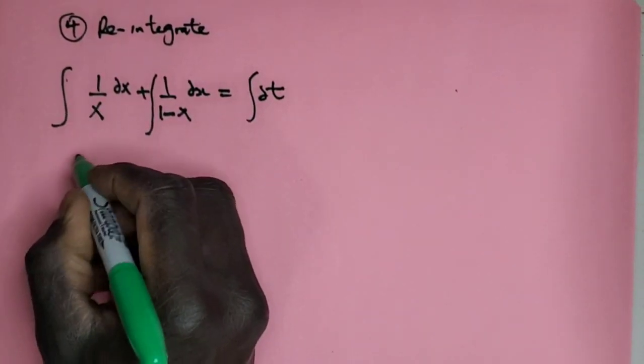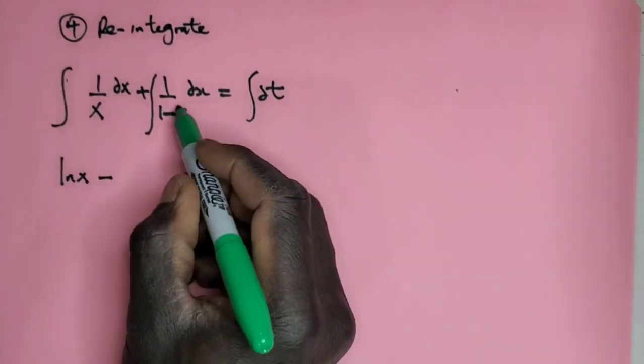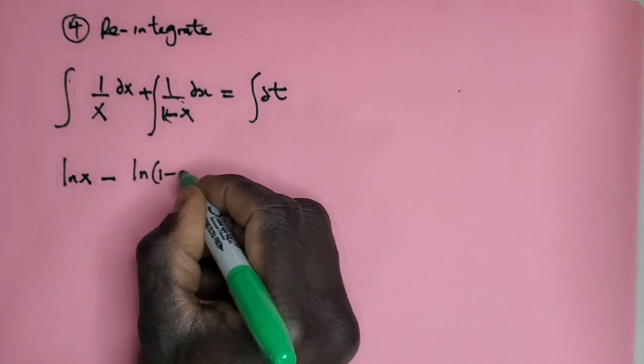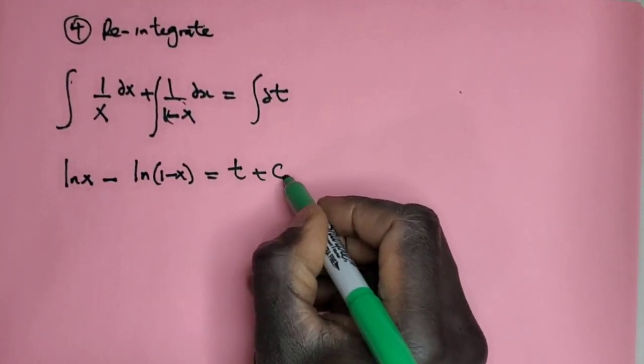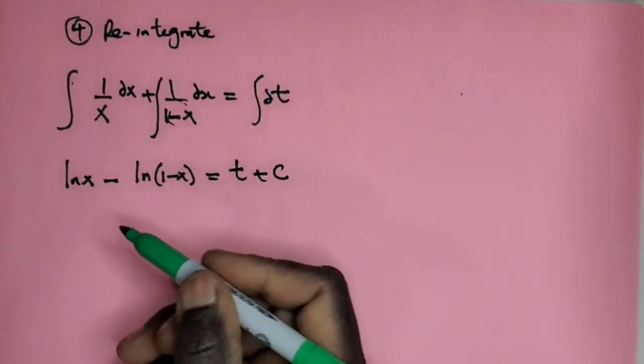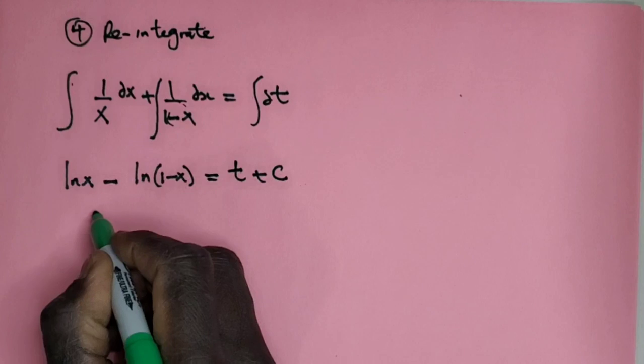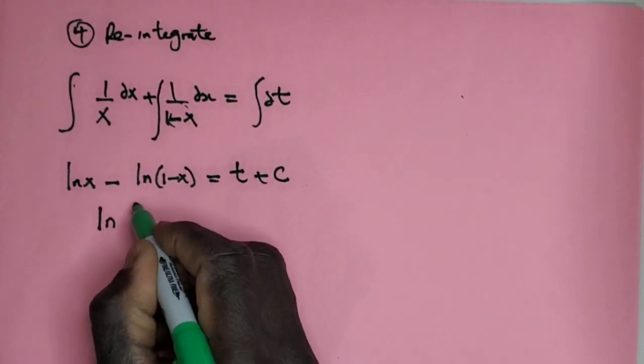Now the integration of this one is just ln(x) minus, because we're going to use a substitution in this one, ln(1-x) = t + C, because this is just a constant of integration. So by log identity, this one is just the same as saying ln(x/(1-x)) = t + C.